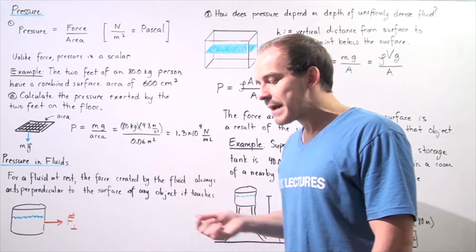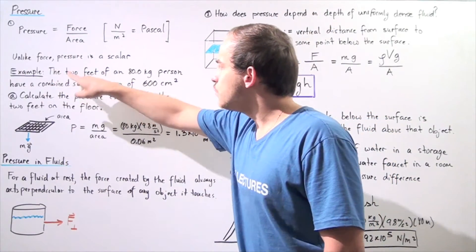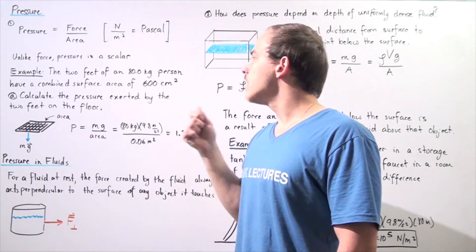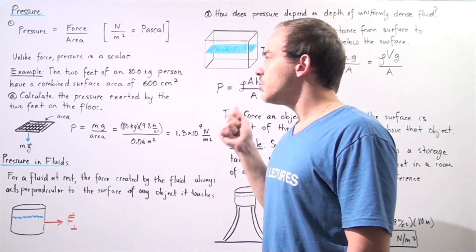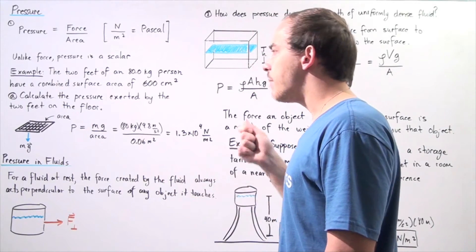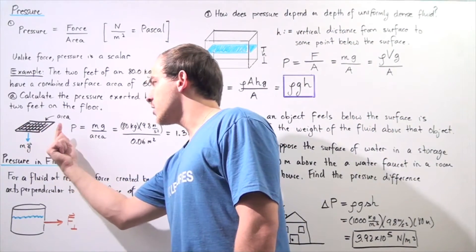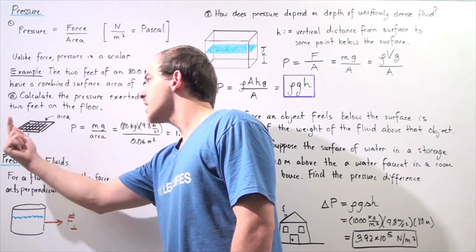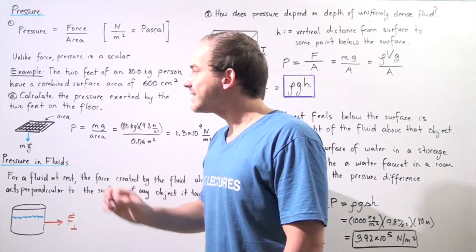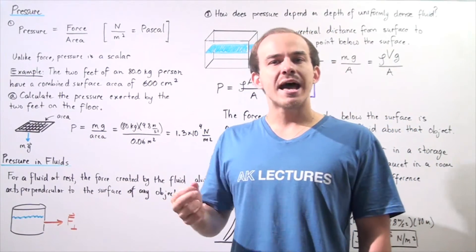Let's look at one particular application of this formula. Let's suppose the two feet of an 80-kilogram person have a combined surface area of 600 centimeters squared. Using this information, we'd like to calculate the pressure exerted by the two feet on the floor. So this area represents the combined area of the two feet — 600 centimeters squared.